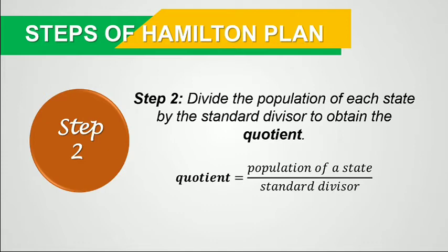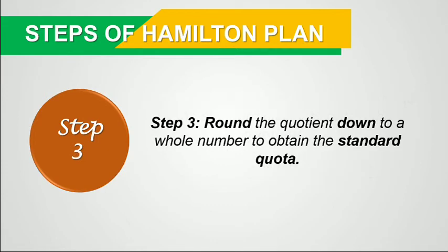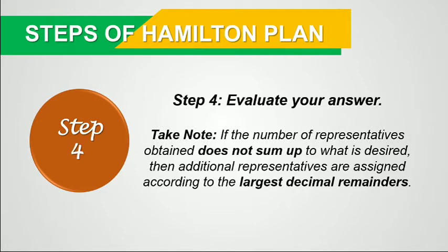The third step is to round the quotient down to a whole number to obtain the standard quota. And lastly, we need to evaluate our answer. If the number of representatives obtained does not sum up to what is desired, then we will assign additional representatives based on the largest decimal remainders of the quotient.